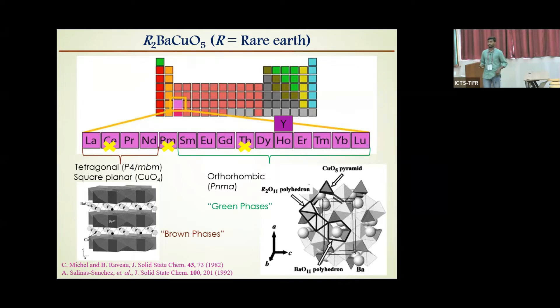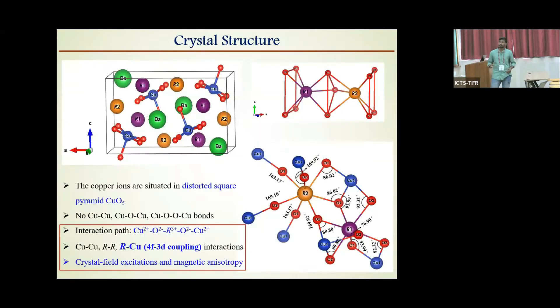Whereas smaller-sized cations from samarium to lutetium, including yttrium, crystallize in centrosymmetric orthorhombic structure with space group Pnma, known as green phases. When we look at the crystal structure, copper is in distorted square pyramidal coordination. Another interesting feature is there are two different sites for the rare earth. Though their coordination is same, their environment is completely different. One rare earth site is surrounded by six copper ions with bond angles close to 180 degrees, whereas the other site is surrounded by three copper ions with bond angles close to 90 degrees. Therefore, the effective molecular field by copper at each rare earth site is different.